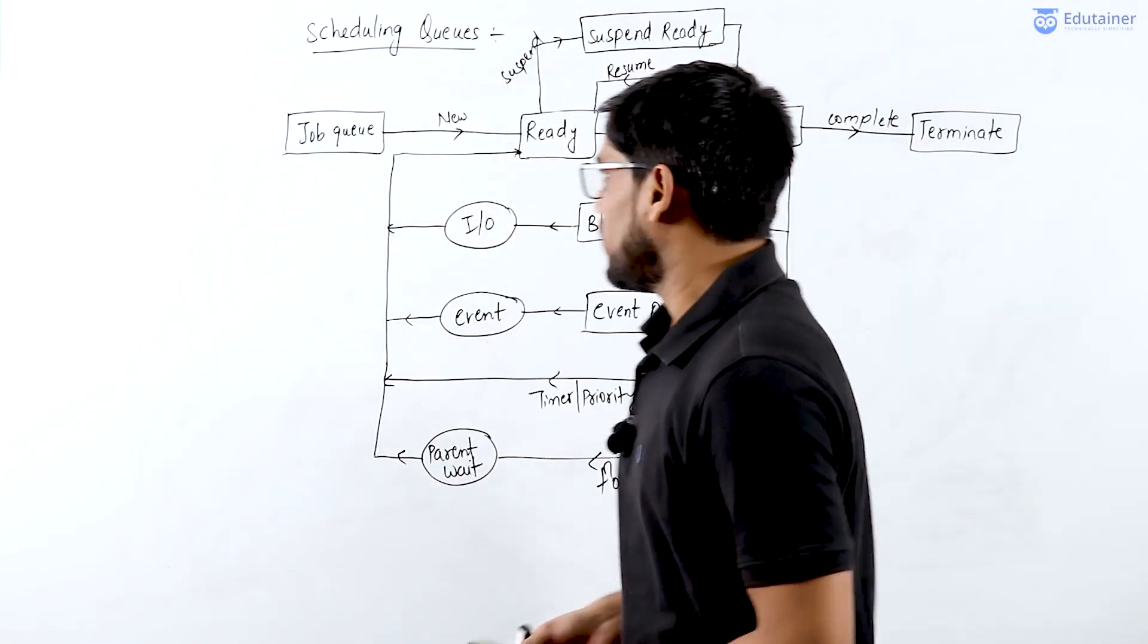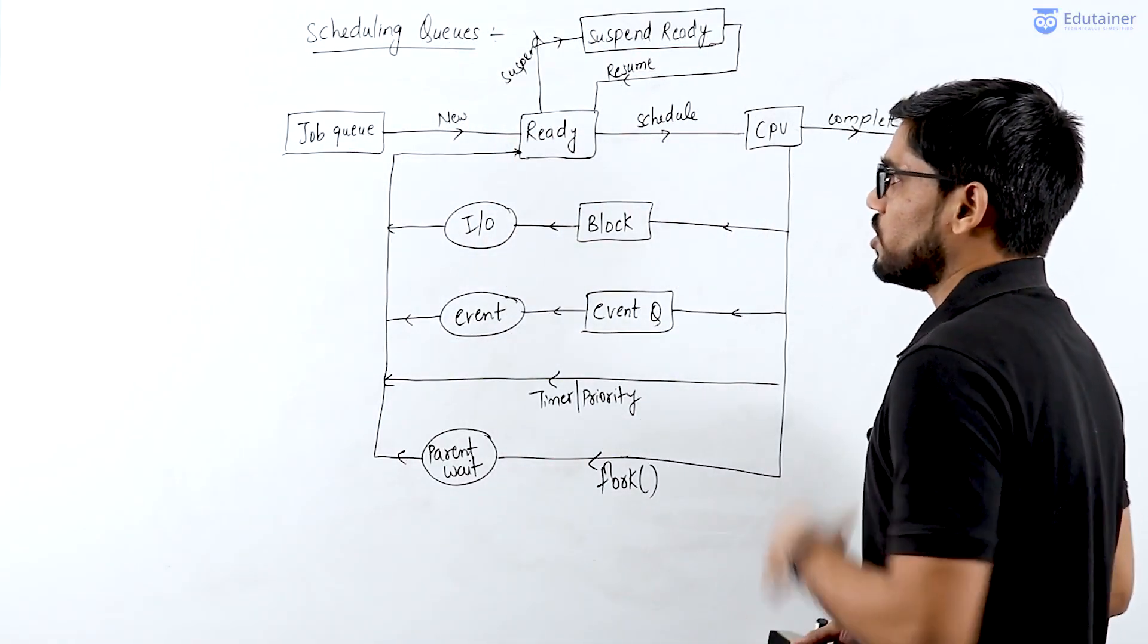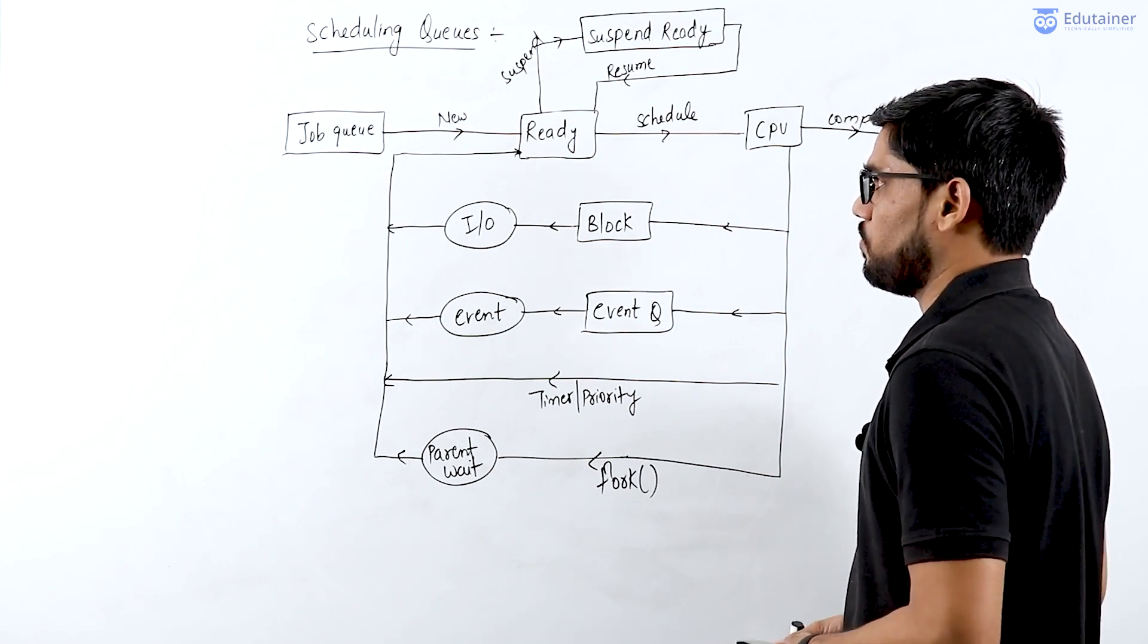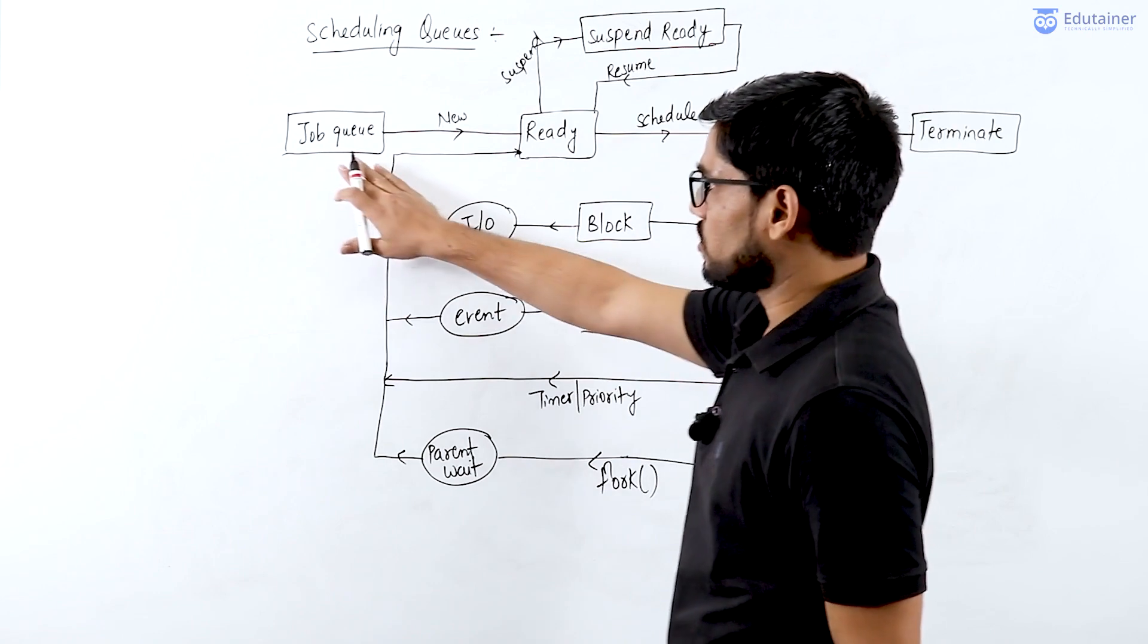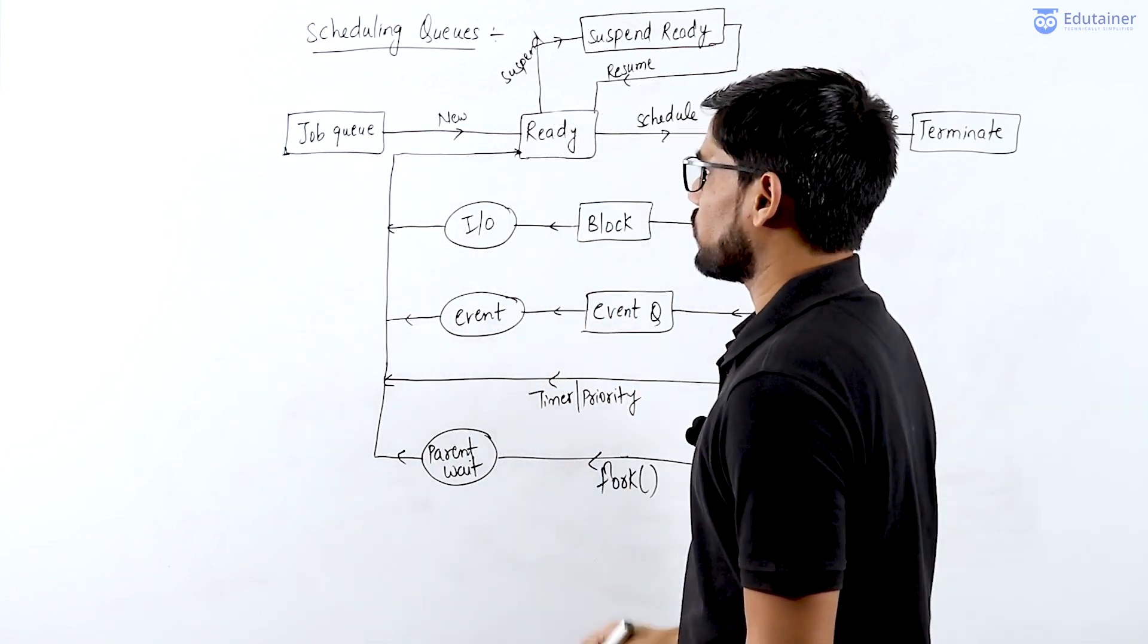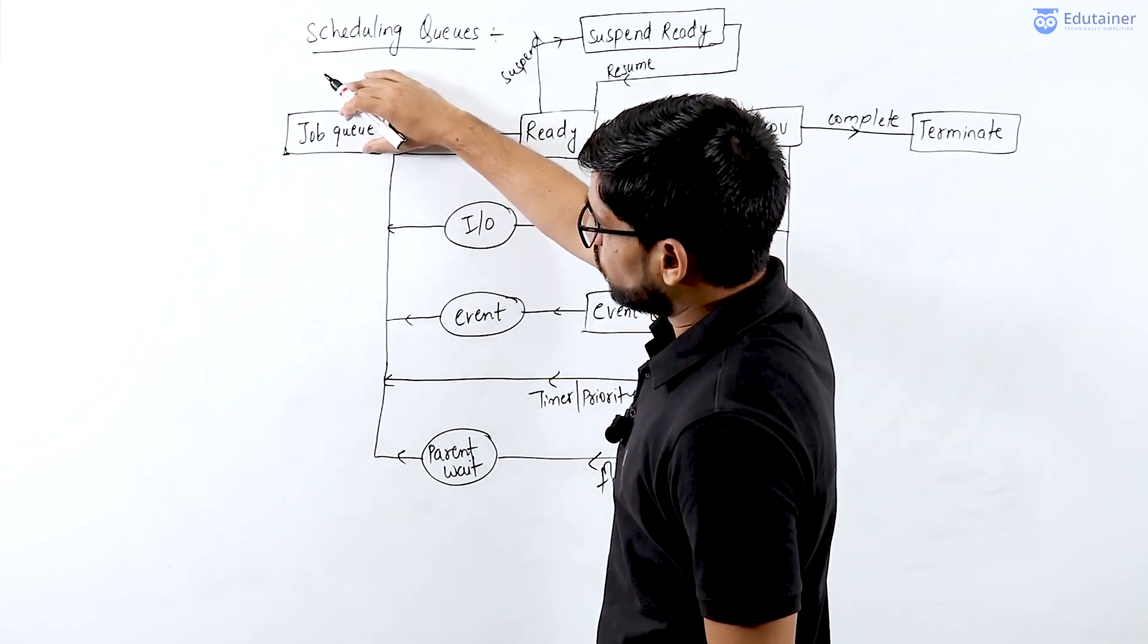Hi everyone, let's see how scheduling queues will be used in the process transition. You can think of it as a queue data structure. The queue data structure is responsible for every state, starting from the job queue.